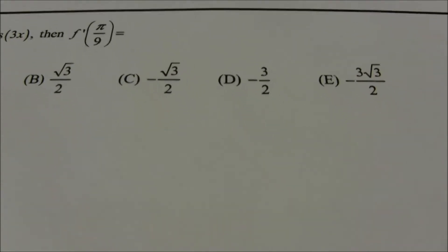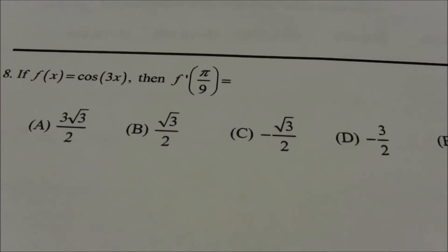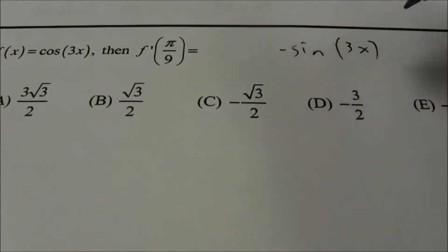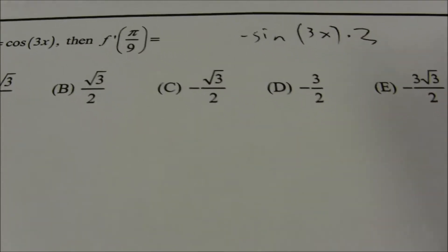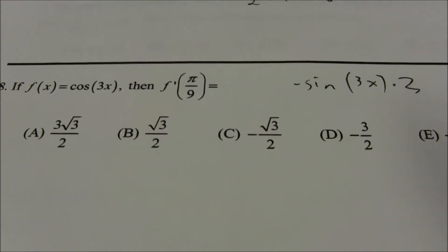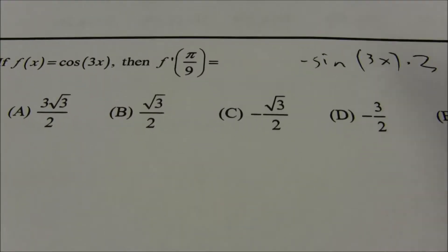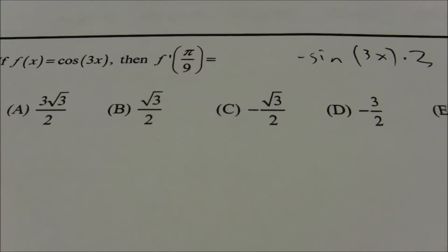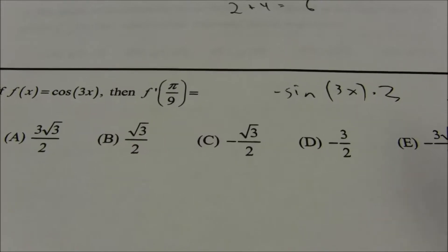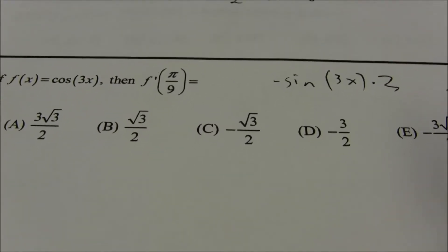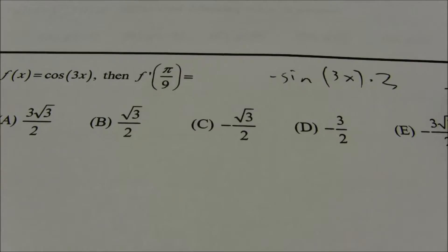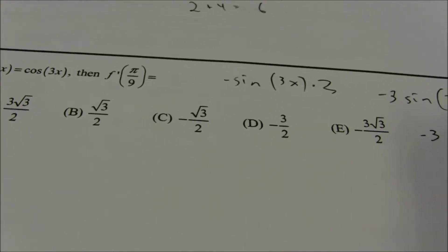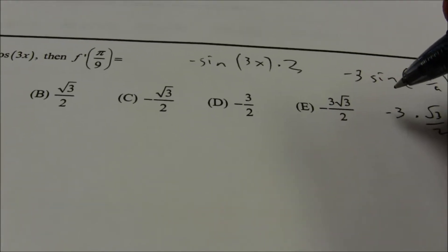Number 8: we want to find the derivative of the cosine function. The derivative of cosine is negative sine of the same thing, and we have to multiply by the derivative of the inside function, which is 3. Then substituting pi over 9: negative 3 sine of 3 times pi over 9, which is pi over 3. Sine of pi over 3 is radical 3 over 2, so the answer is negative 3 times radical 3 over 2. That is answer E.